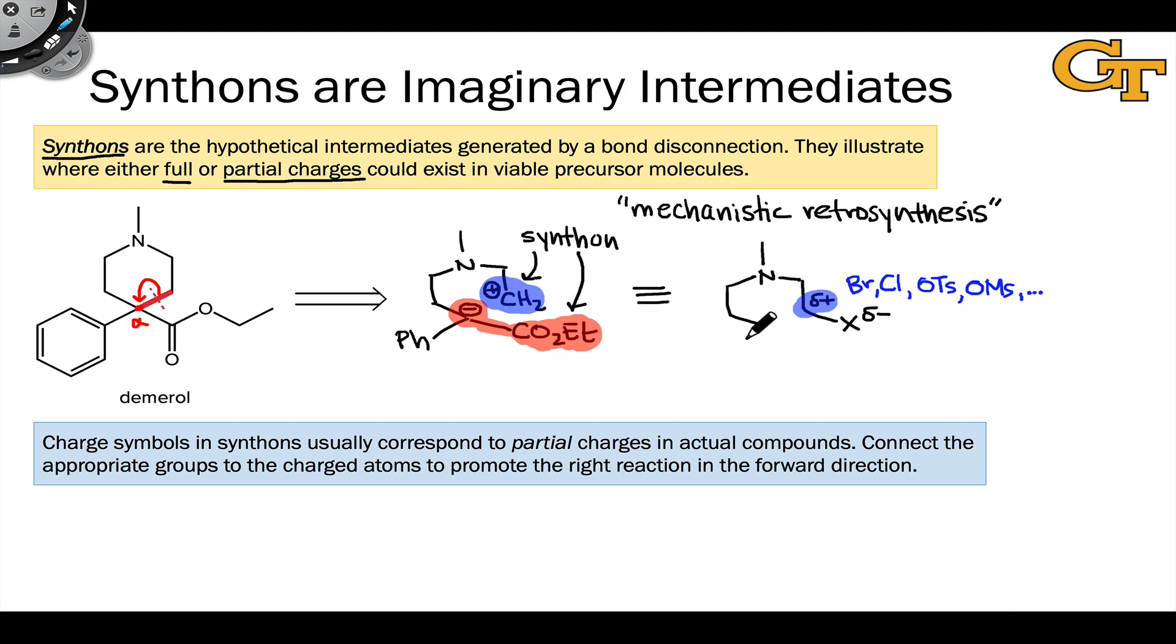In the case of the enolate, the precursor to an enolate typically is a structure in which we just have a hydrogen linked to the carbon that ultimately becomes negatively charged. The idea there is that we're going to generate the negative charge via deprotonation with a strong base, something like LDA. And so we can add that hydrogen here to generate a real structure, a stable compound, something we can put in a bottle that is a precursor to the synthon structure.